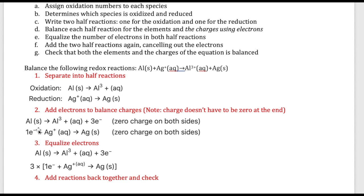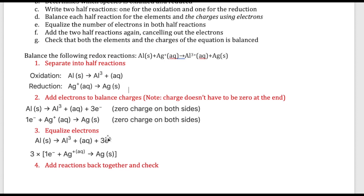To balance out the electrons, I'm going to multiply the bottom equation by three, while the top one stays as is since it already has three electrons. So I have the top equation the same, and the bottom equation is three times the original — multiplying across gives three electrons, three silver ions, and three silver elements.